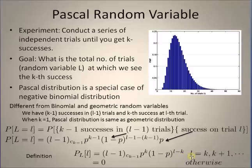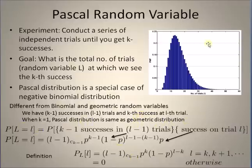By definition, the probability mass function of the Pascal random variable is: P(L = l) = C(l−1, k−1) · p^k · (1−p)^(l−k), where l is the realization of the random variable L. The value of l starts at k and increases from there, taking only integer values. Note that when k equals 1 — that is, when we want only one success — the Pascal distribution is exactly the same as the geometric distribution.